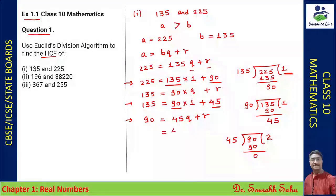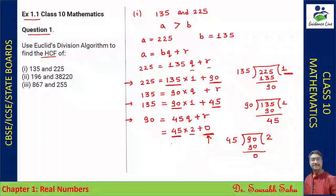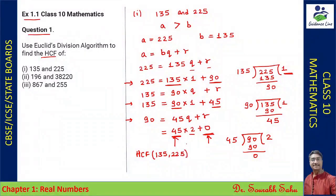When 45 multiplied by 2 gives remainder 0 — whenever the remainder value becomes 0, whatever the value of b is, that is the HCF. So the HCF of 135 and 225 is 45.